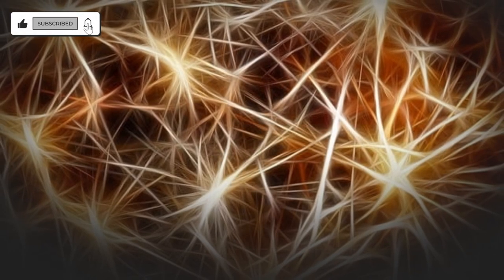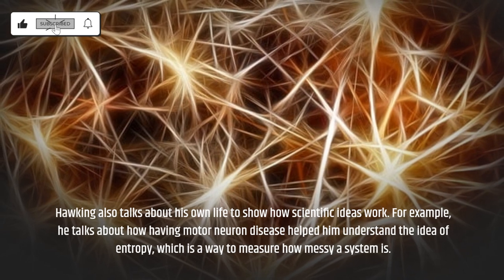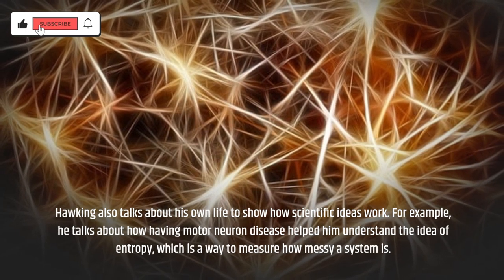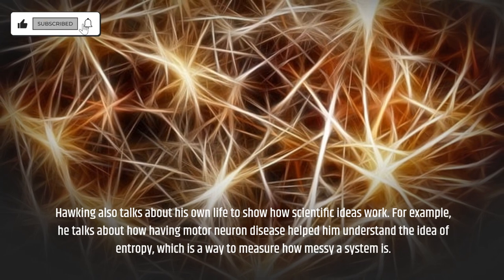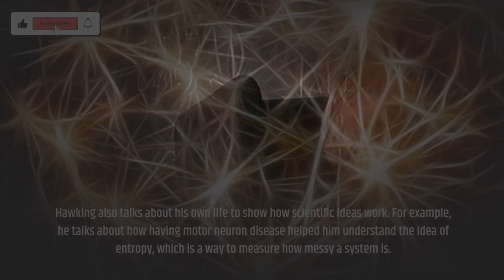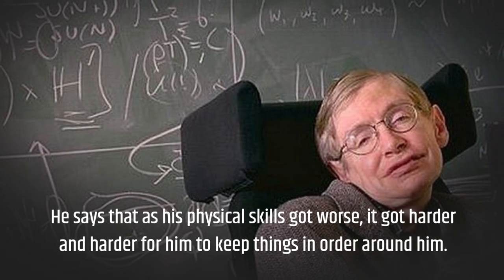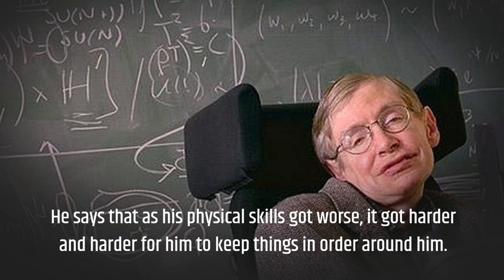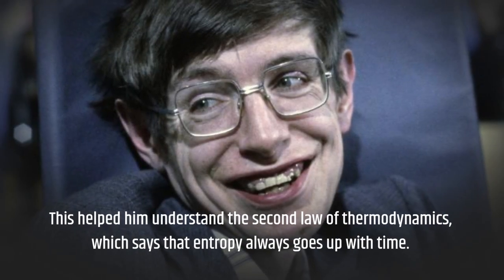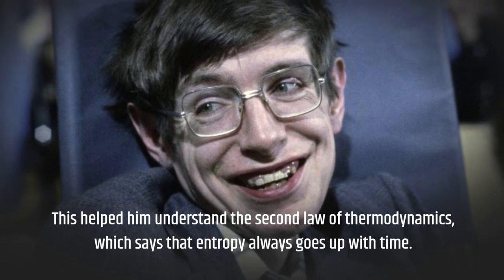Hawking also talks about his own life to show how scientific ideas work. For example, he talks about how having motor neuron disease helped him understand the idea of entropy, which is a way to measure how messy a system is. He says that as his physical skills got worse, it got harder and harder for him to keep things in order around him. This helped him understand the second law of thermodynamics, which says that entropy always goes up with time.